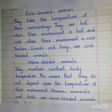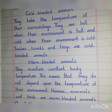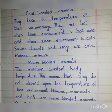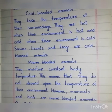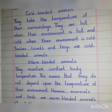Warm blooded animals are those animals that produce their own heat and regulate a constant body temperature in any environment. Warm blooded animal species can maintain a body temperature higher than their environment. They maintain a stable body temperature by regulating their metabolic process. Animals such as birds and mammals are all warm blooded animals because they maintain a constant body temperature regardless of the surrounding temperature. Humans are also warm blooded animals.